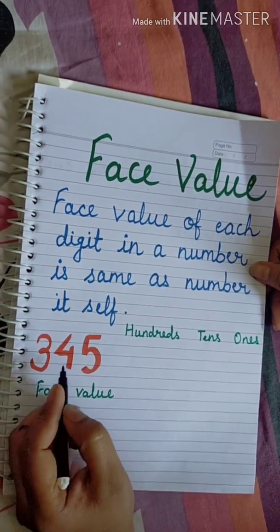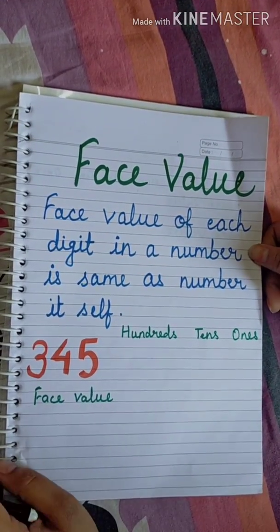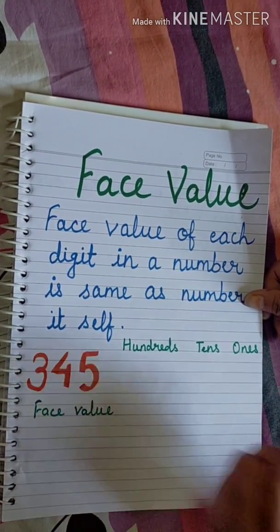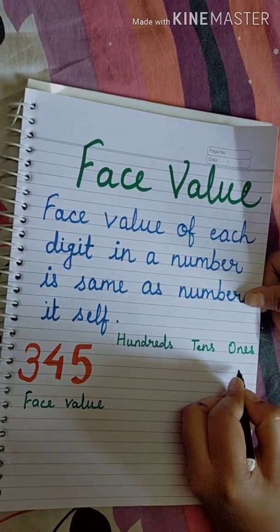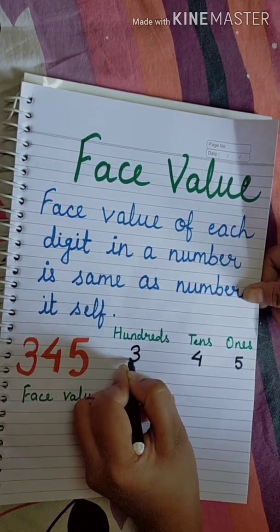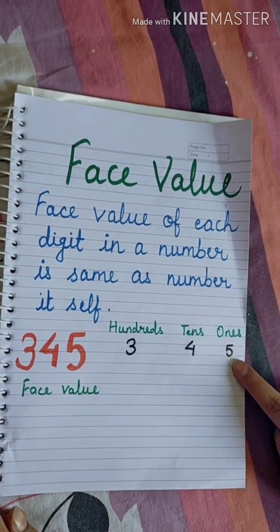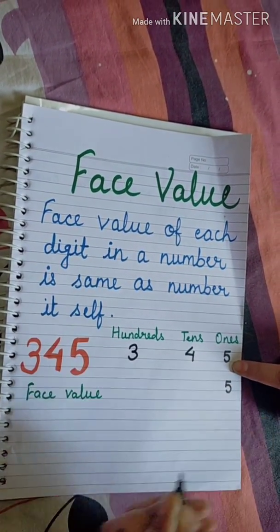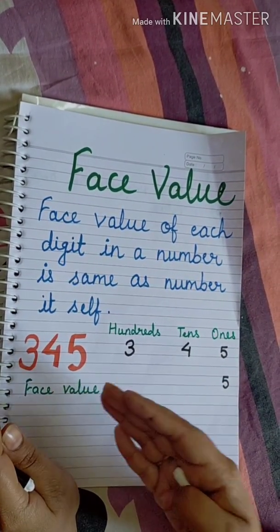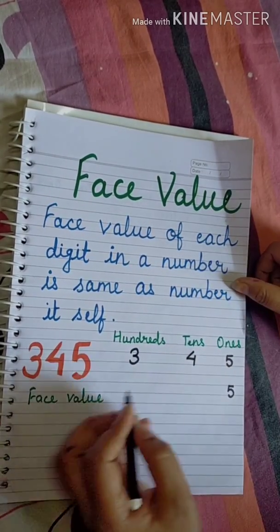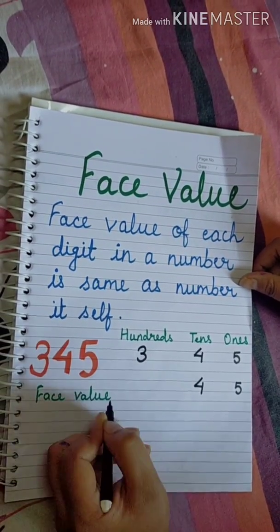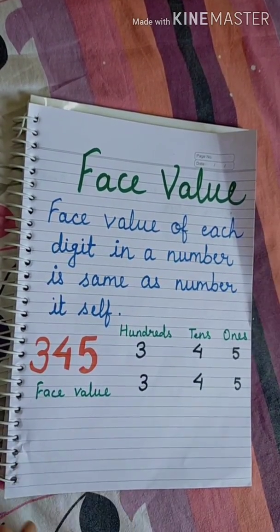Let's learn with an example. I have taken number 345. First we need to place these digits in their position: 5 is in the 1's place, 4 is in the 10's place, 3 is in the 100's place. Face value of 5 is 5. It doesn't matter whether it is in the 1's, 10's, or 100's place — face value is the same as the number itself. So face value of 4 is 4, and face value of 3 is 3. See, it's very easy.